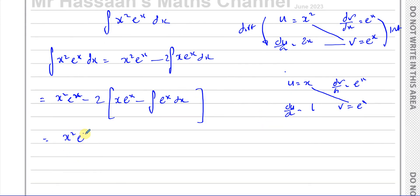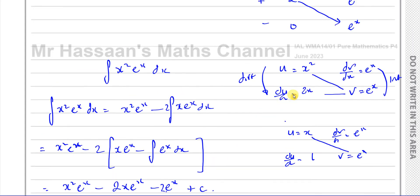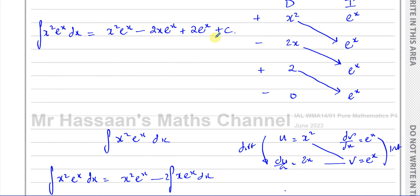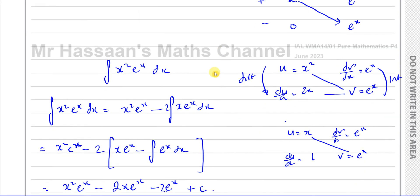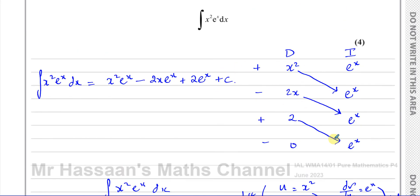Finally you can write your answer: x squared e to the power of x minus 2x e to the power of x, and then integrating e to the power of x gives e to the power of x. Multiplying through by the factor of 2 gives plus 2 times e to the power of x plus c. You can see that's the same answer we got with the DI method.